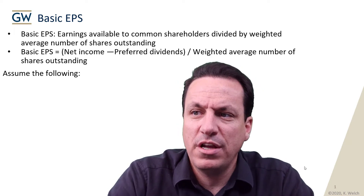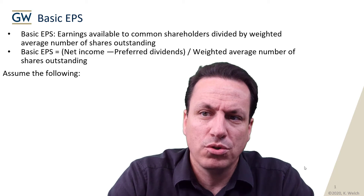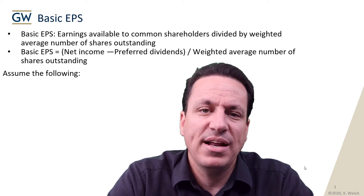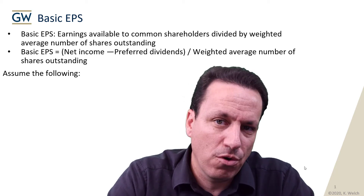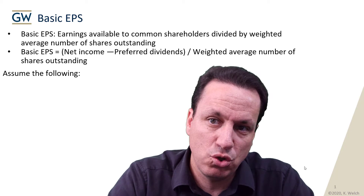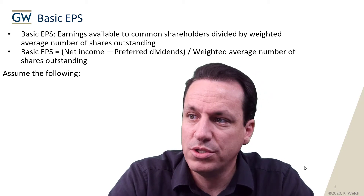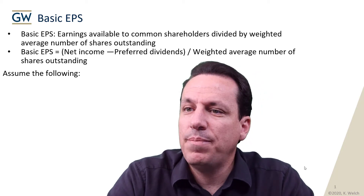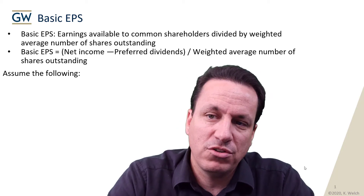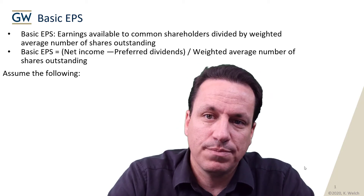How do we get the earnings available to common shareholders? We take net income minus the preferred shareholder dividends, divided by the weighted average number of shares outstanding.